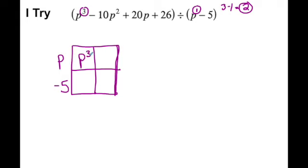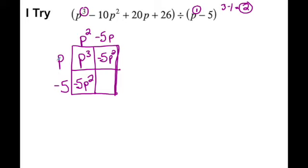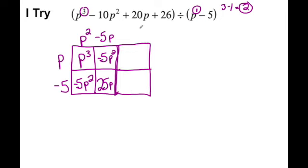The leading coefficient goes in the upper left. If the leading term is p cubed, I need p squared here, so p squared times p is p cubed. Now p squared times negative 5 gives negative 5p squared. I know the p squareds are on the diagonals, so I need another negative 5p squared, so that these add up to negative 10p squared. I put negative 5p because negative 5p times p is negative 5p squared. And in this box I put 25p.